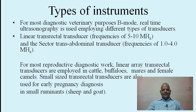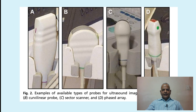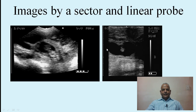Small-size transrectal ultrasound transducers are also used for early pregnancy diagnosis in small ruminants, especially sheep and goats. The types of probes for ultrasound imaging include the linear array, the curvilinear, the sector scan, and the phased array. For reproductive diagnosis in large and small animals, we use the linear and sector probes.